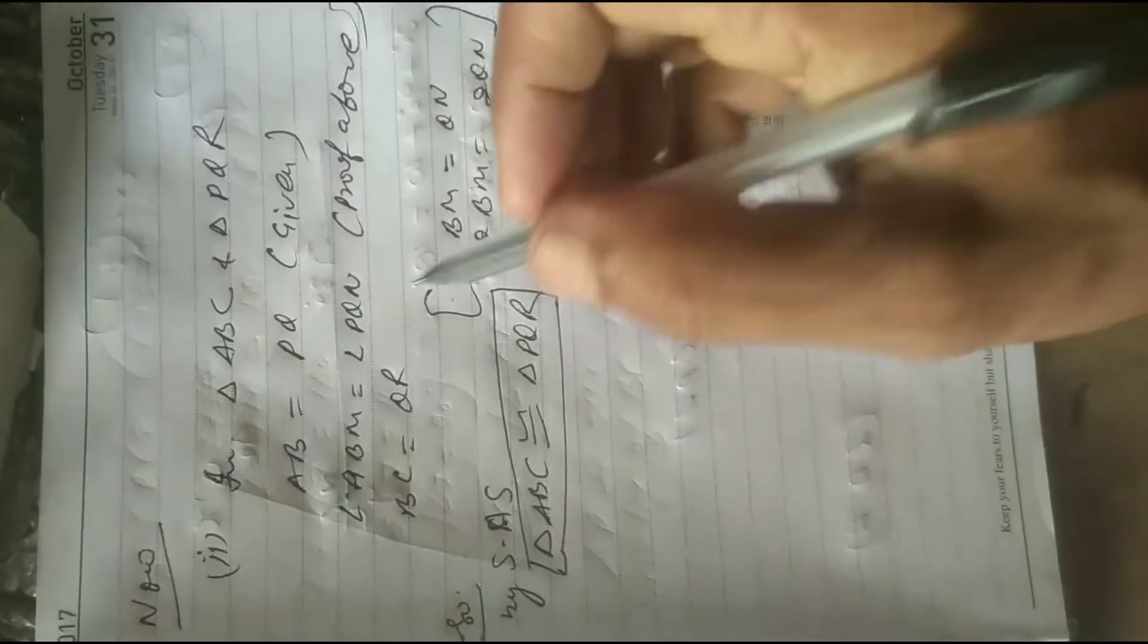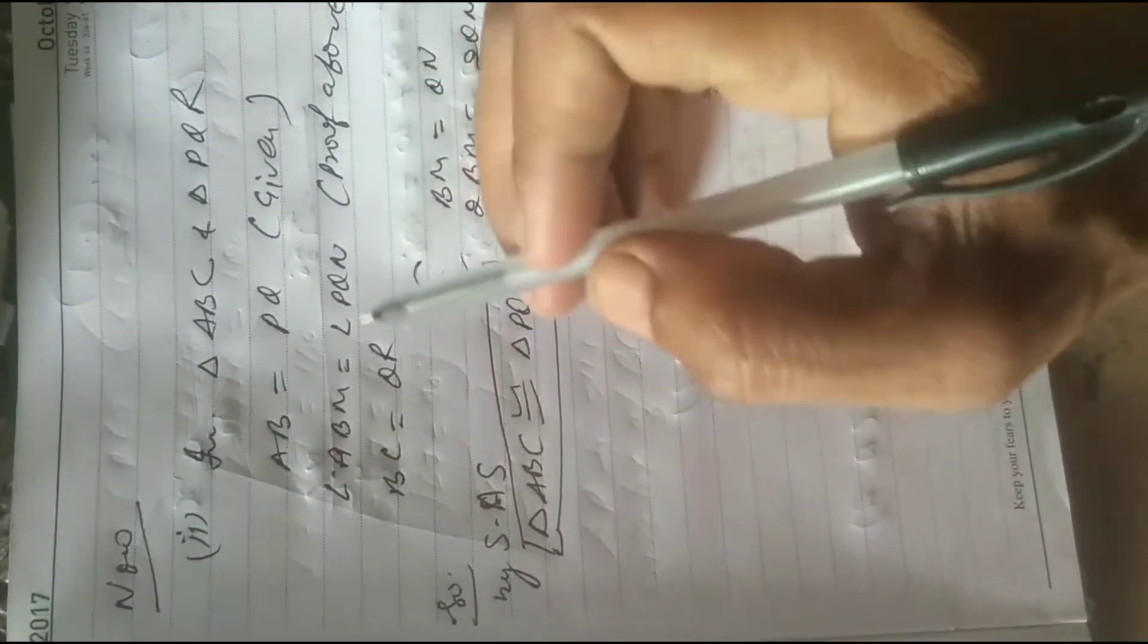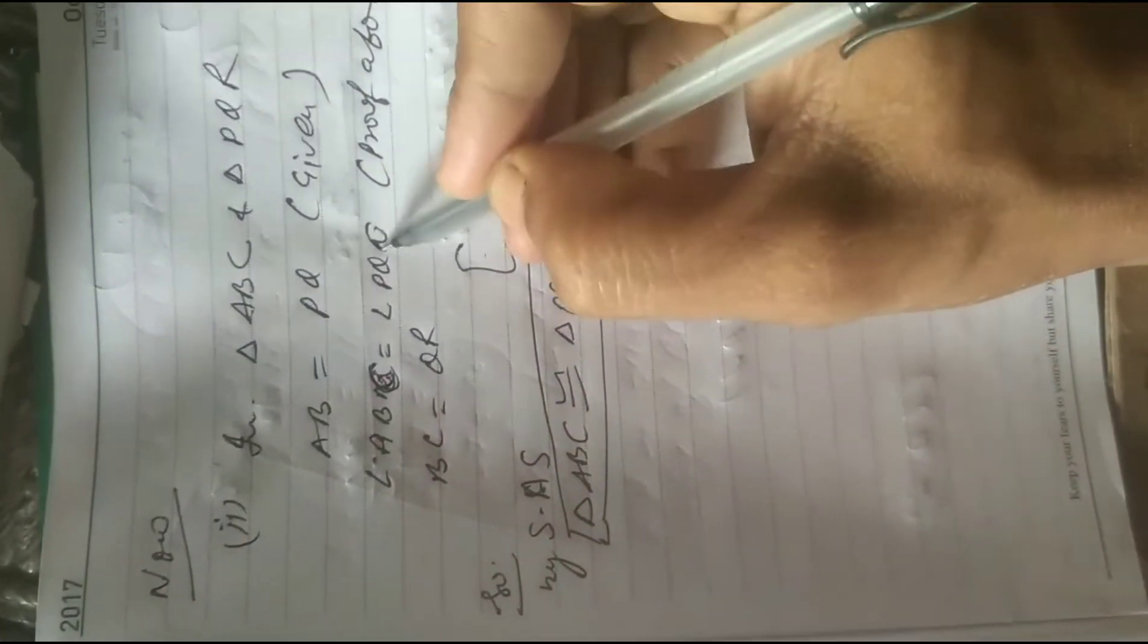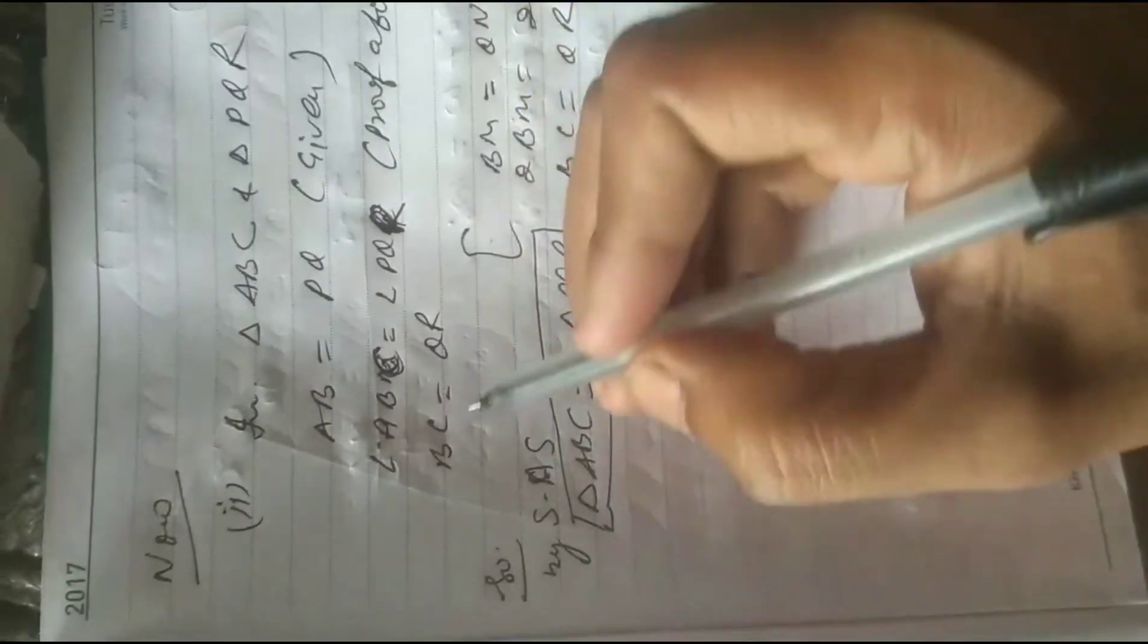Now in triangle AVC and triangle PQR, AV equal to PQ given, angle AVM equals angle PQR proved, and BC equal to QR given.